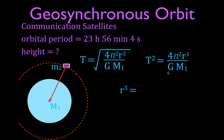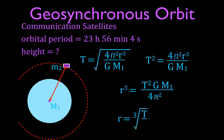Rearranging the equation by cross-multiplying and dividing, we get that R cubed equals T squared times G times M divided by 4π². Taking the cube root of both sides, the radius R for a given period equals the cube root of (T² × G × M / 4π²). We'll plug in our specific orbital period T into this equation to find what height is needed to achieve that period.